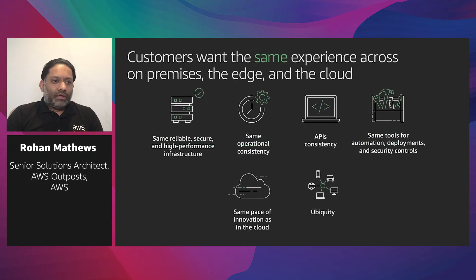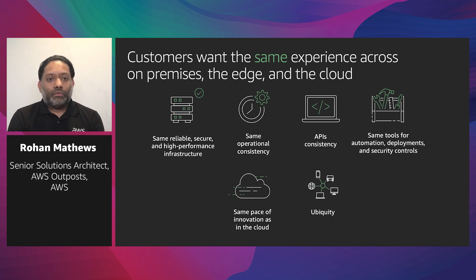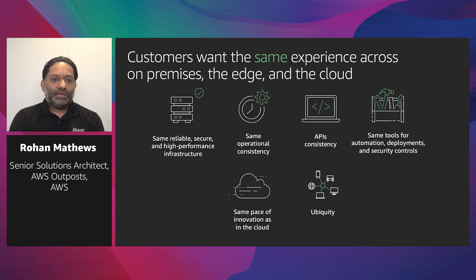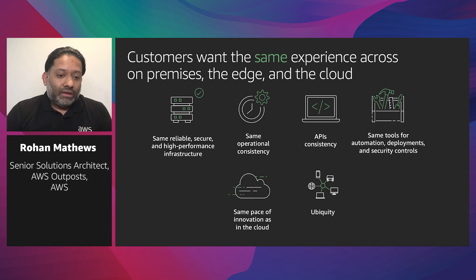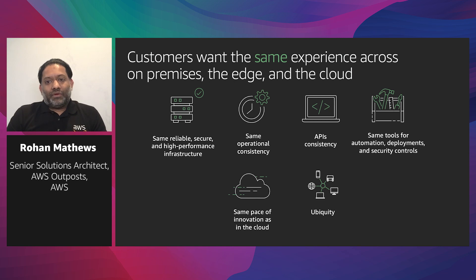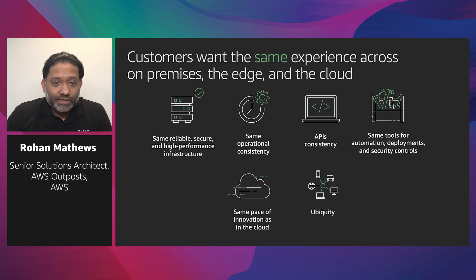Customers also told us they wanted the same reliable, secure, and high-performance infrastructure that AWS runs in its regions, built on the Nitro system. They wanted the same operational consistency, the same API consistency, and the same tools for automation, deployment, and security. Customers had tried for years to implement this on their own or through other vendors, and it had been very challenging. They've also always enjoyed the pace of innovation that AWS brings, helping them innovate and grow their businesses.